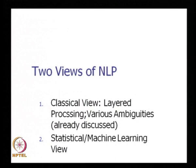This is lecture four on natural language processing. We will talk about two views of language technology. There are two views of natural language processing: the first view is the classical view with layered processing and various ambiguities discussed over the last few lectures. The other predominant view is the statistical or machine learning view. Let us spend some time understanding the difference between these two views and why there are two predominant approaches.